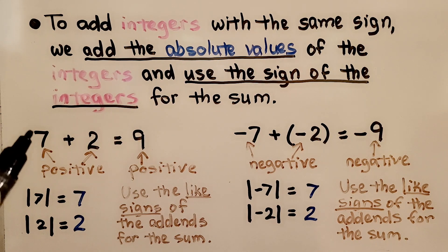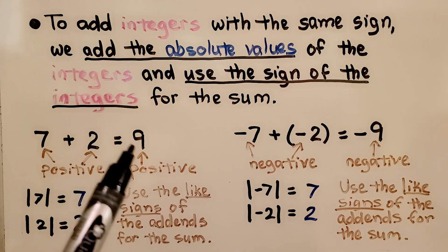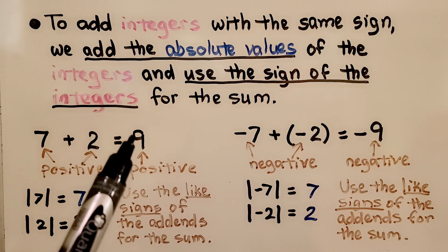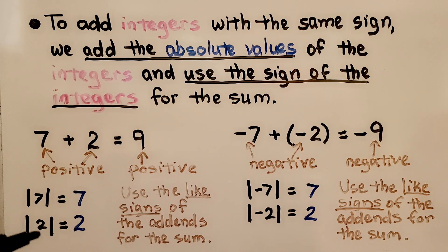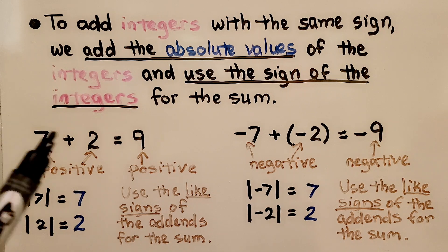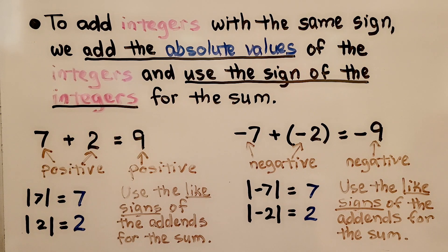We use the sign of the integers. We have a positive 7 and a positive 2, so the sum is going to be positive. The absolute value of 7 is 7 — it's 7 jumps from zero. The absolute value of 2 is 2. We add these together and use the sign of the addends. They're both positive, so we have a positive 9.